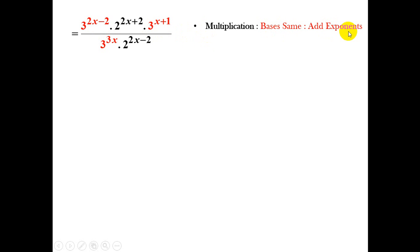So if we look at 3 to the power of 2x minus 2, and 3 to the power of x plus 1, we can add the exponents. 2x plus x is 3x, minus 2 plus 1 is minus 1.